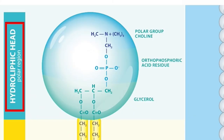The polar head group contains a phosphate group and a positively charged nitrogen group, both of which are polar and can interact with water molecules. Further, these molecules are bound to glycerol, a slightly polar molecule that can bind fatty acids together into groups.